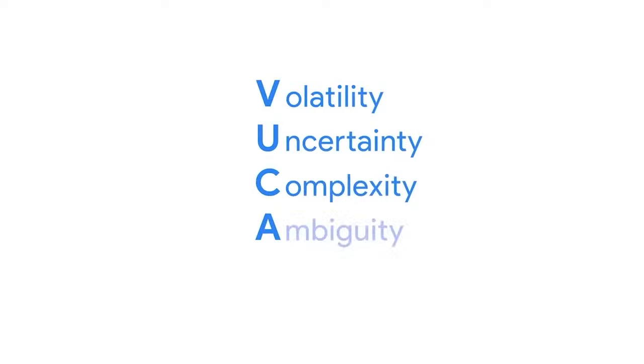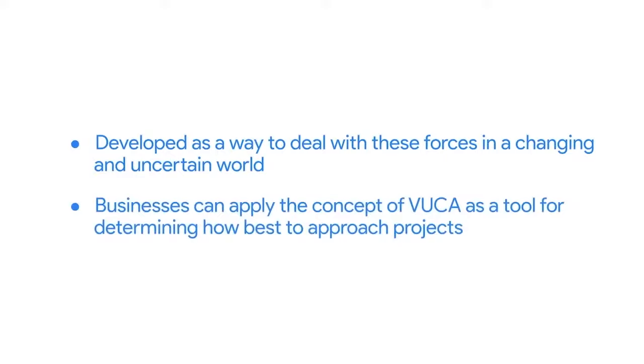And finally, we have Ambiguity, which refers to the possibility of misunderstanding the conditions and root causes of events or circumstances. A project that suffered from ambiguity would have difficulty pinpointing the causes of project delays, making it difficult to design mitigation plans to reduce the risks. VUCA stands for Volatility, Uncertainty, Complexity, and Ambiguity — a concept developed to deal with these forces in a changing and uncertain world. Businesses can apply the concept of VUCA as a tool for determining how best to approach projects. Adopting an Agile approach increases your chances of success despite this uncertainty.